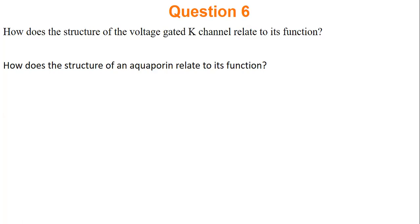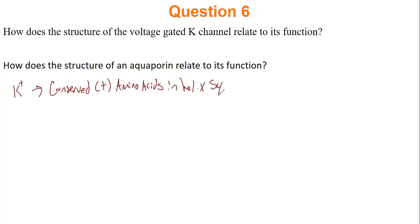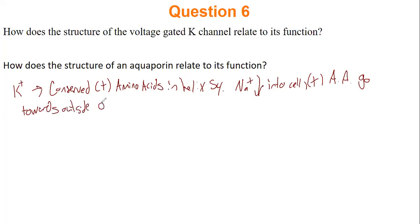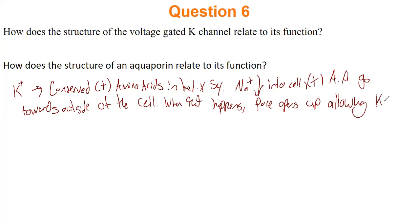The potassium channel has conserved positively charged amino acids in helix S4. When sodium flows in, those positively charged amino acids go towards the outside of the cell. When that happens, the pore opens up, allowing potassium to go into the cell.